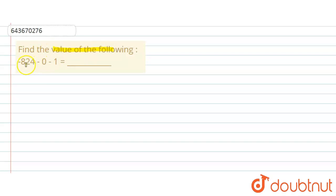find the value of the following: -824 - 0 - 1. So we will solve this. Here the given number is -824 - 0 - 1.